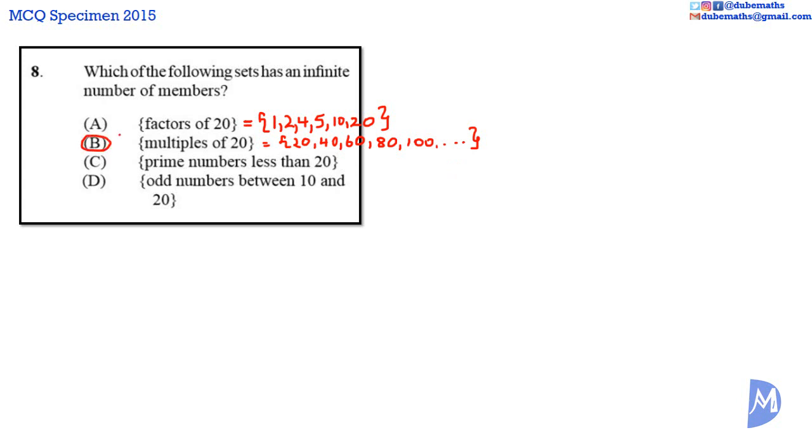I'll go to the other two answers for completeness. C. The set of prime numbers less than 20 is the set of 2, 3, 5, 7, 11, 13, 17, 19. And D.